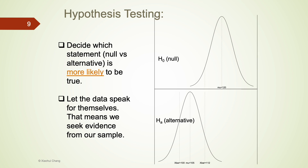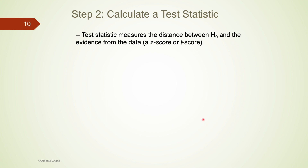Generally speaking, in step 1 of hypothesis testing, we have decided on two statements about the population parameter. The null is: the average waiting time is at least 120 seconds. The alternative is: the waiting time is less than 120 seconds. The two statements are plotted together here, with the null placed to the right of the alternative. In the following steps of hypothesis testing, we will use information from the data to determine which of the null and alternative is more likely to be true. This useful information is measured in terms of test statistics in step 2.